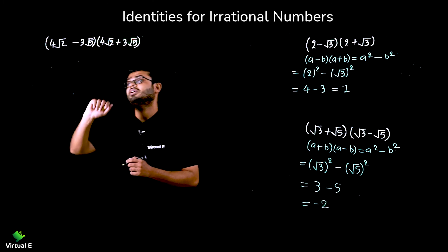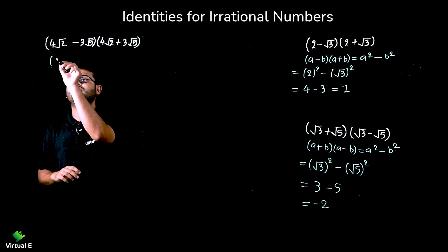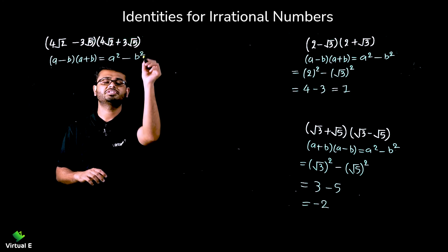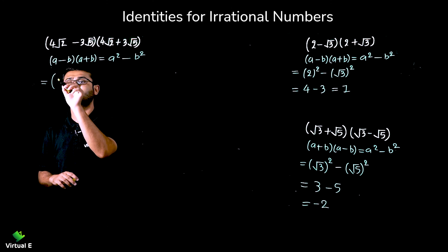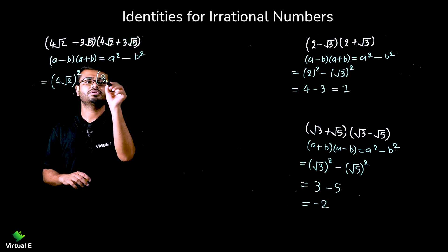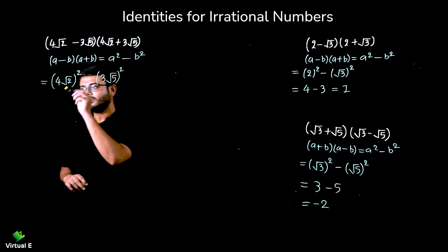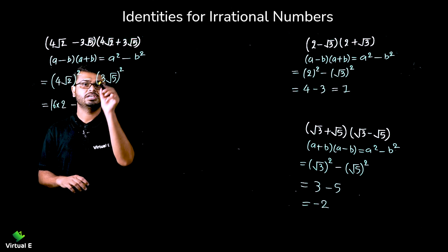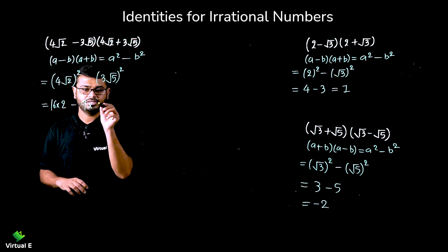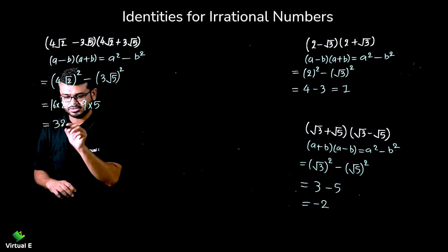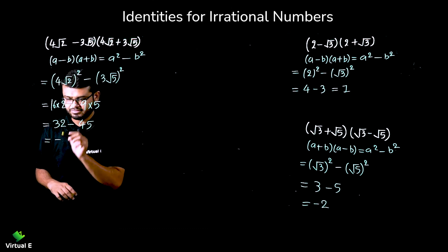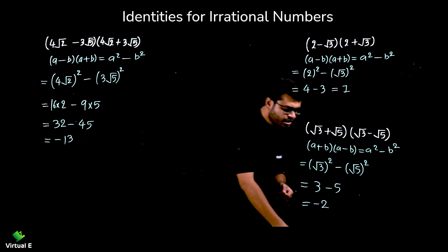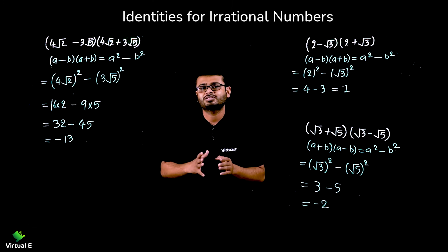Let's discuss one more where we have irrational numbers along with whole numbers. Applying (a - b)(a + b) = a² - b² to (4√2 + 3√5)(4√2 - 3√5): we get (4√2)² - (3√5)². That is 16·2 - 9·5 = 32 - 45 = -13. So the answer is -13.